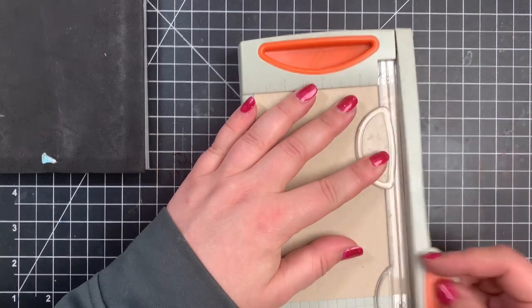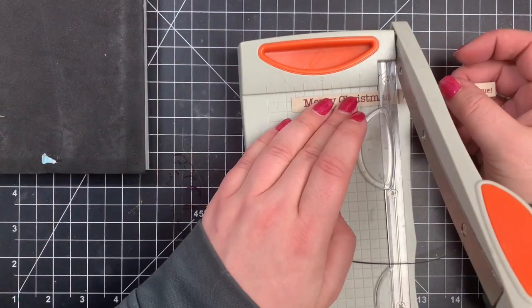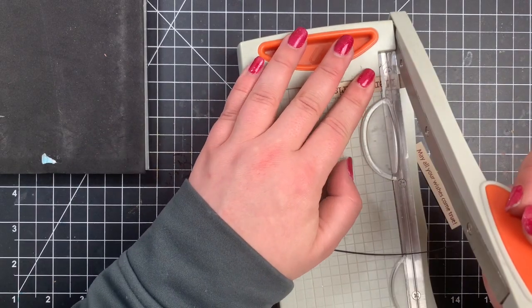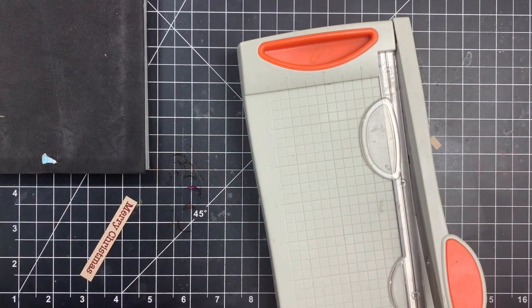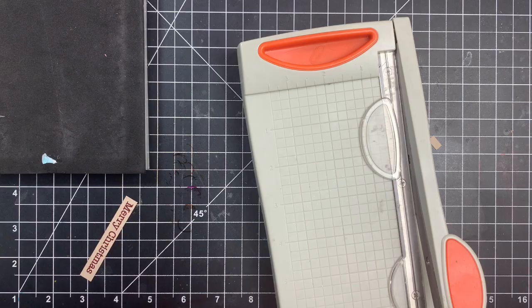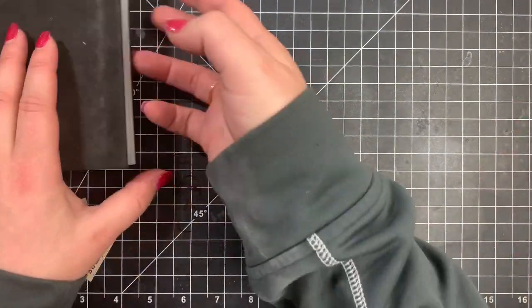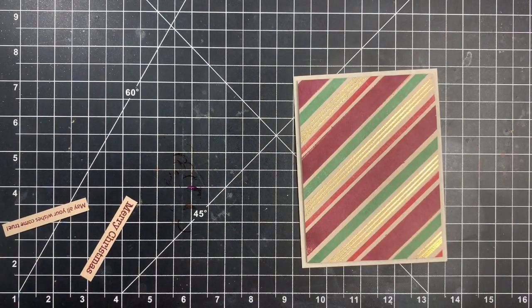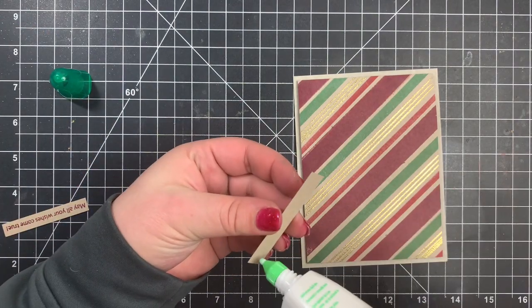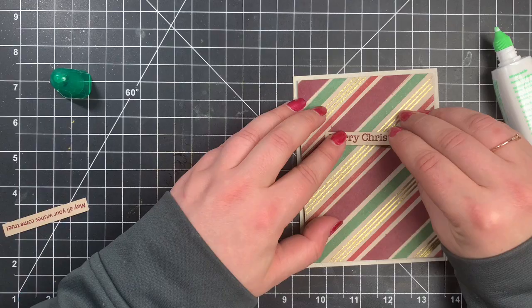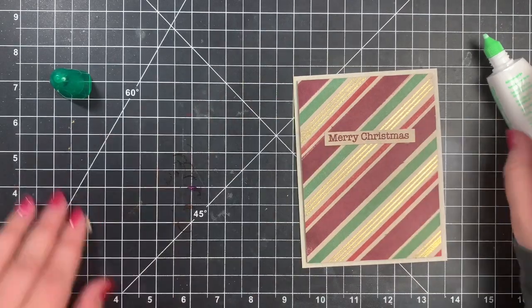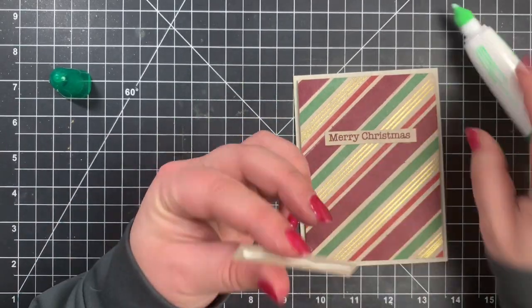And then I am going to glue these flat down. I'm not going to pop these up because I already have my panel popped up and I don't want to add too much dimension. If we add too much dimension, sometimes it doesn't go through the mail all that great and obviously it will require additional postage too, but I'm more worried that the card is going to get ruined in transit. So I did glue these down flat and that is it for that one.